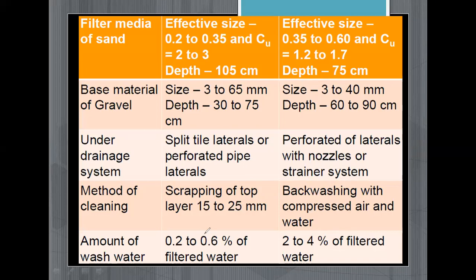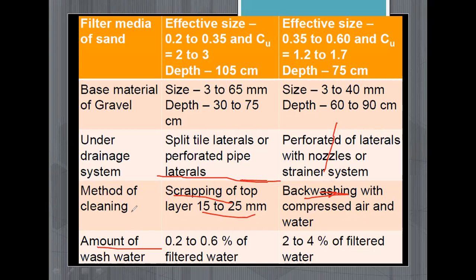The method of cleaning: in the slow sand filter, scraping of the top layer of 15 to 50 mm is done. In the rapid sand filter, back washing is done. Regarding the amount of wash water required for cleaning the filter: in the slow sand filter it is 0.2 to 6 percent of the filtered water, while in the rapid sand filter this quantity is somewhat bigger — 2 to 4 percent of filtered water.